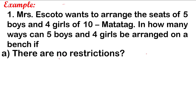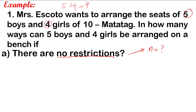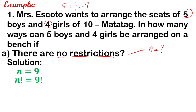Take note of the words 'no restrictions.' When there are no restrictions, the most important thing is to find the value of N. N is the total number of objects we are dealing with in the problem. So we have 5 boys and 4 girls — that is 5 plus 4, which is equivalent to 9. So the value of N is 9. If N is 9, automatically proceed with the factorial representation: N factorial is 9 factorial.